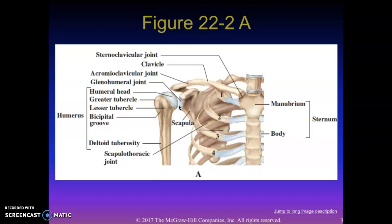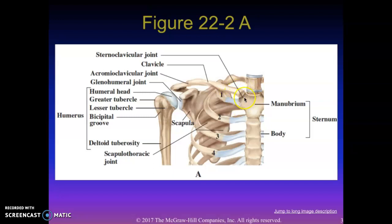Let's talk about the bony anatomy. Starting all the way over here — this is your sternum, right in the middle of your chest. At the bottom is the xiphoid process. The middle segment is called the body of the sternum. Up at the top, right at the bottom of your throat, is called the manubrium. The manubrium part of the sternum attaches to the clavicle, which is also called your collarbone. This joint right here is called the sternoclavicular joint — it attaches the sternum to the clavicle.